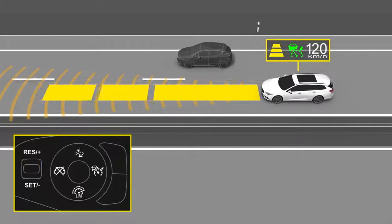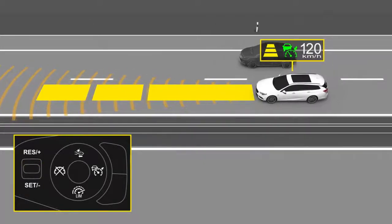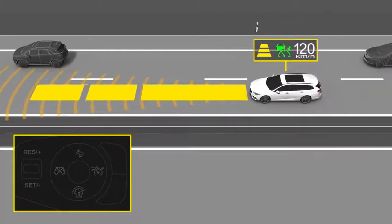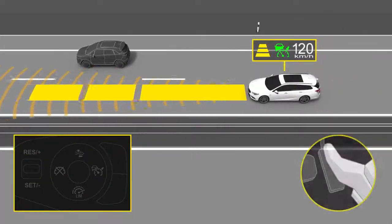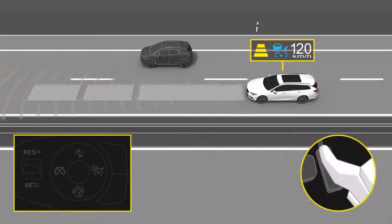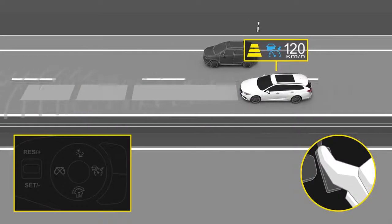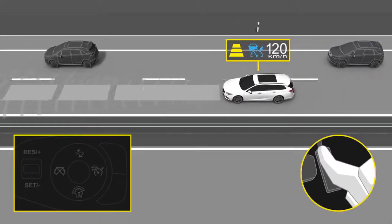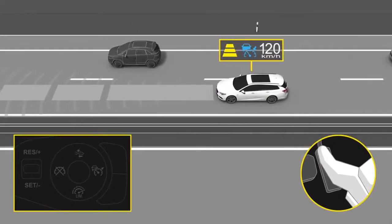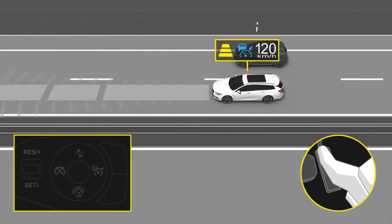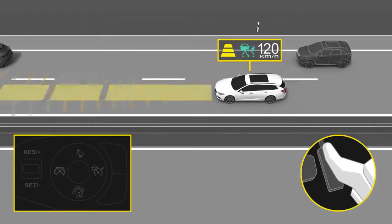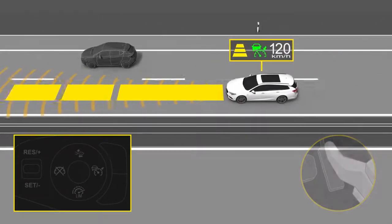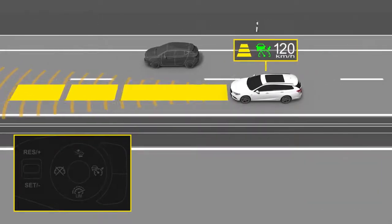You can temporarily override the set speed by pressing the accelerator pedal. While overriding, the automatic braking function of ACC will not be available. When releasing the accelerator pedal, the set speed will be resumed.